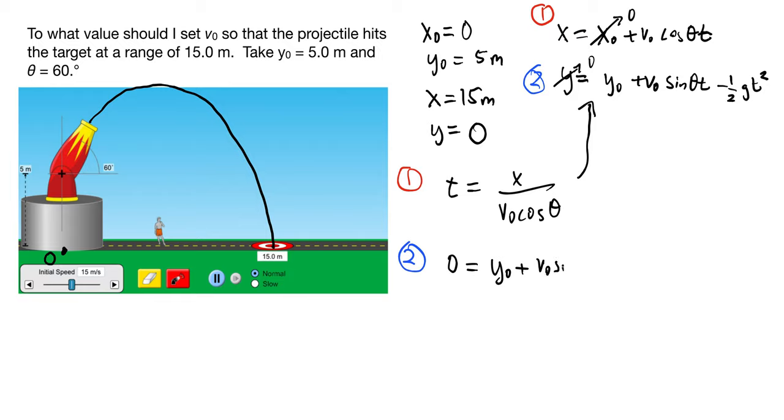V0 sin theta, that's just from the equation, and now I plug in this value up here for the time. So that's x over V0 cos theta.